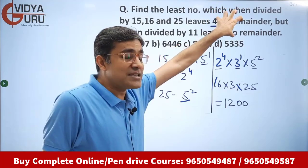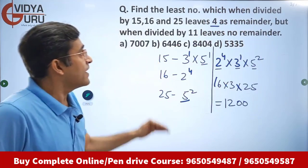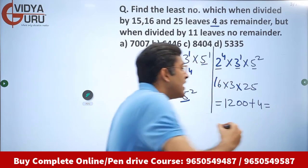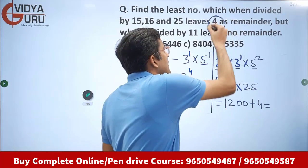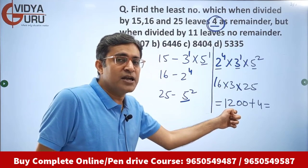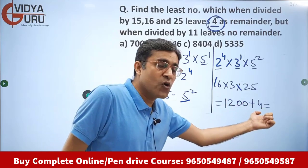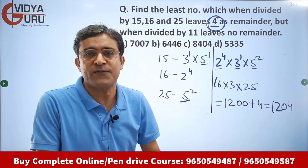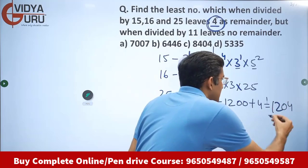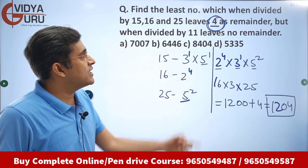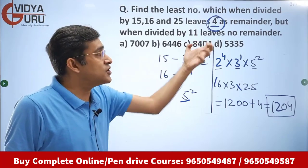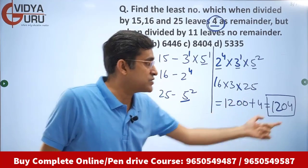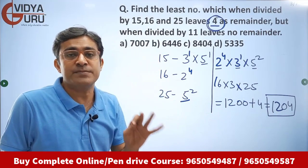Now read the question carefully — 4 is left as the remainder. That means the number is 4 higher than the LCM. When divided by 15, 16 and 25, everything up to 1200 is perfectly divisible, but 4 will be left as a remainder if the number is 1204. The extra 4 is left as the remainder. But is 1204 divisible by 11? No, 1204 is not divisible by 11.